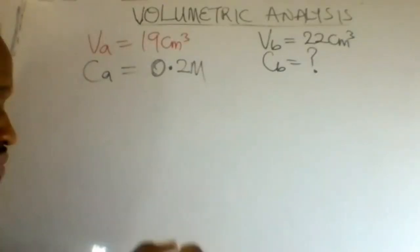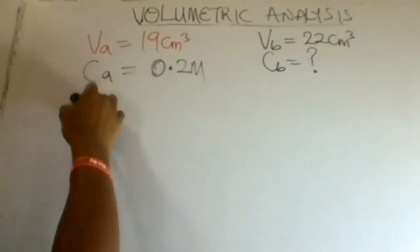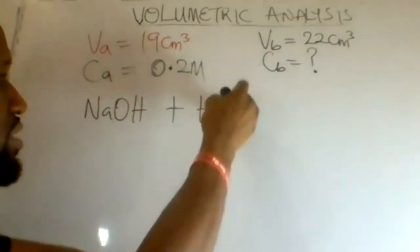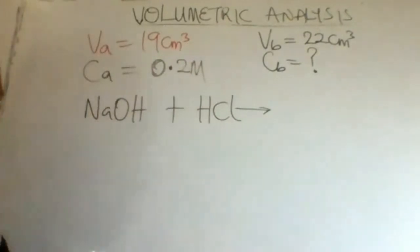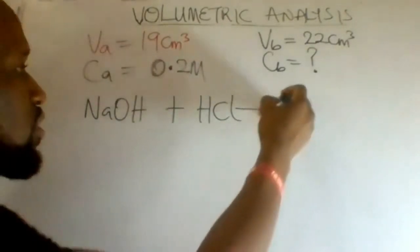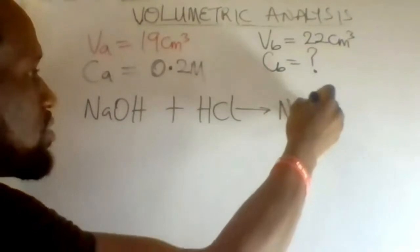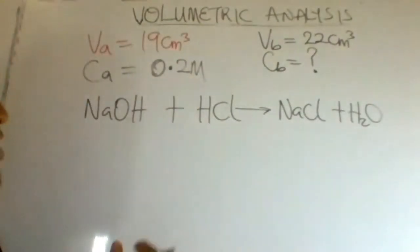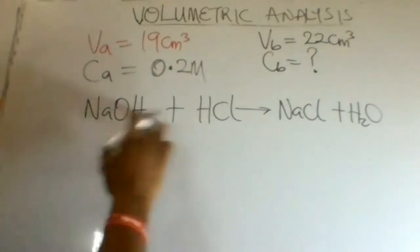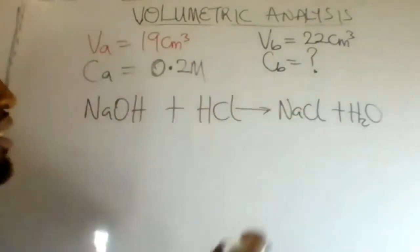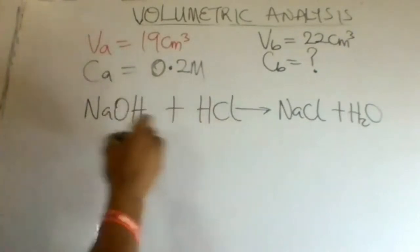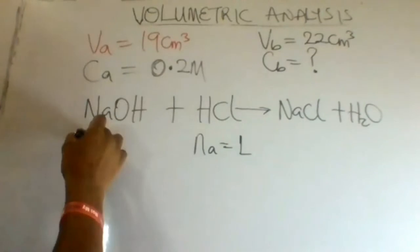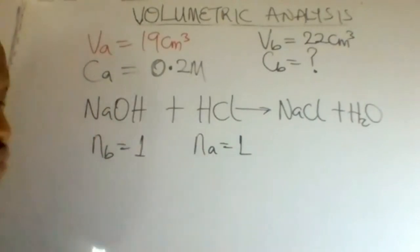This reaction is between sodium hydroxide and hydrochloric acid. The products formed are sodium chloride and water. This is a neutralization reaction in which the base combines with the acid to form salt and water. In the balanced equation, the number of moles for the acid is one mole and the number of moles for the base is also one mole.